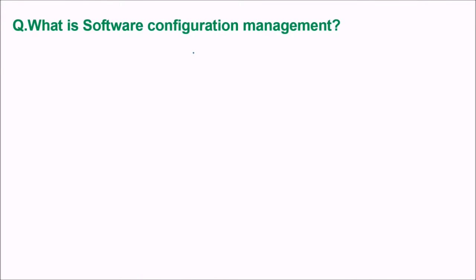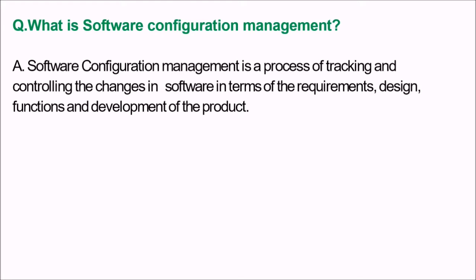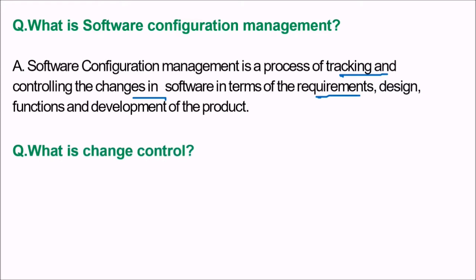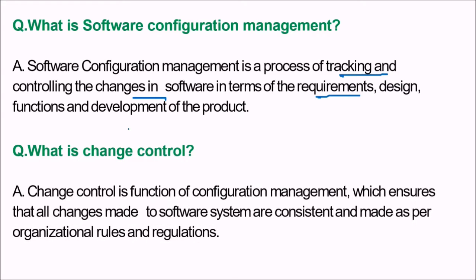What is SCM? Software Configuration Management — or software change management — is the process of tracking and controlling changes in the software in terms of requirement, design, function, and development of the product. What is change control? Change control is a function of configuration management which ensures that all changes made to the software system are consistent and made as per organization rules and regulations.